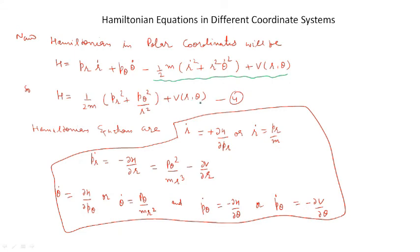Now we apply the Hamiltonian equations. For coordinate r: r_dot equal to del H over del pr, giving r_dot equal to pr/m; and pr_dot equal to minus del H over del r, giving pr_dot equal to p_theta²/(mr³) minus del V over del r. For coordinate theta: theta_dot equal to del H over del p_theta, giving theta_dot equal to p_theta/(mr²); and p_theta_dot equal to minus del H over del theta, giving p_theta_dot equal to minus del V over del theta. Thank you.